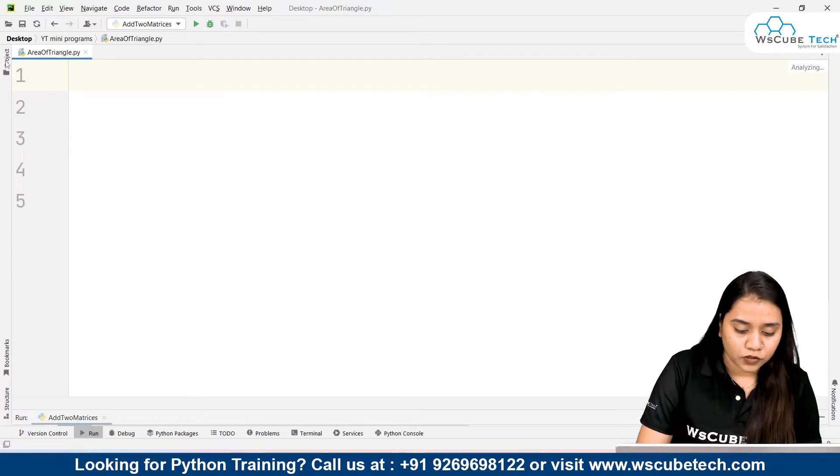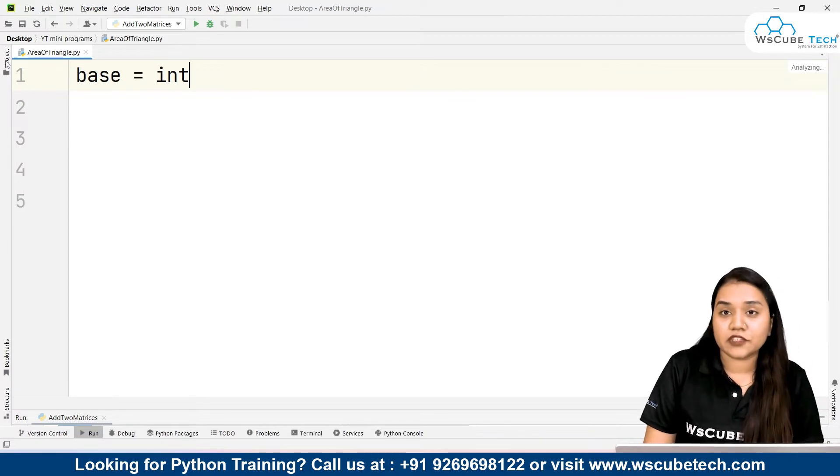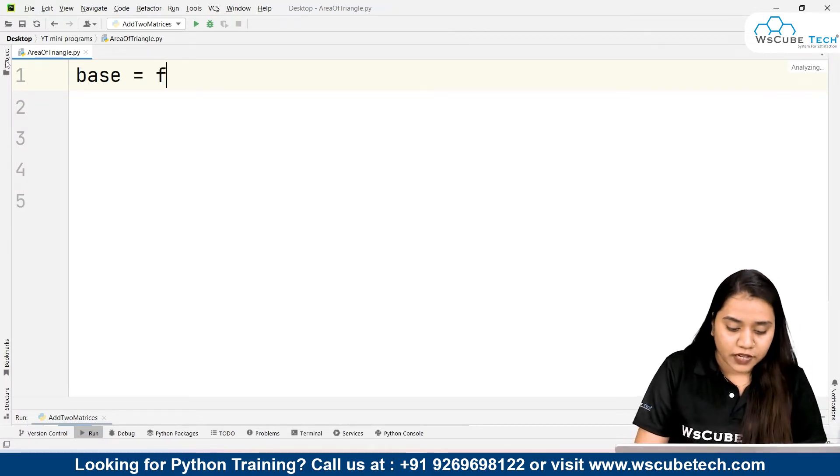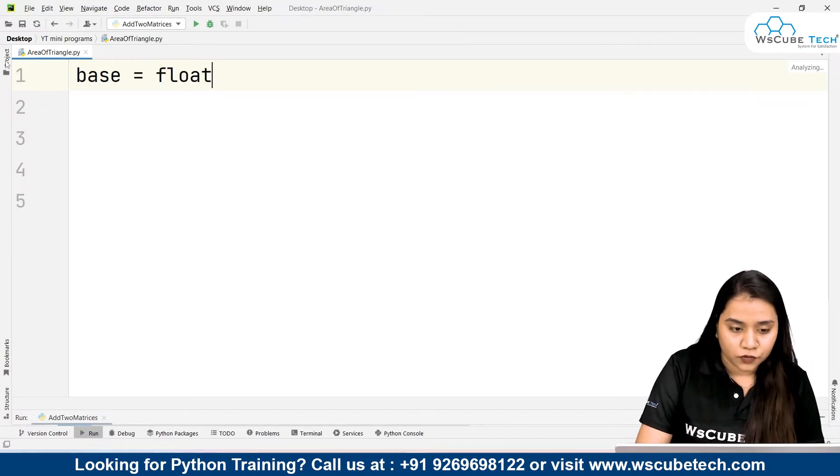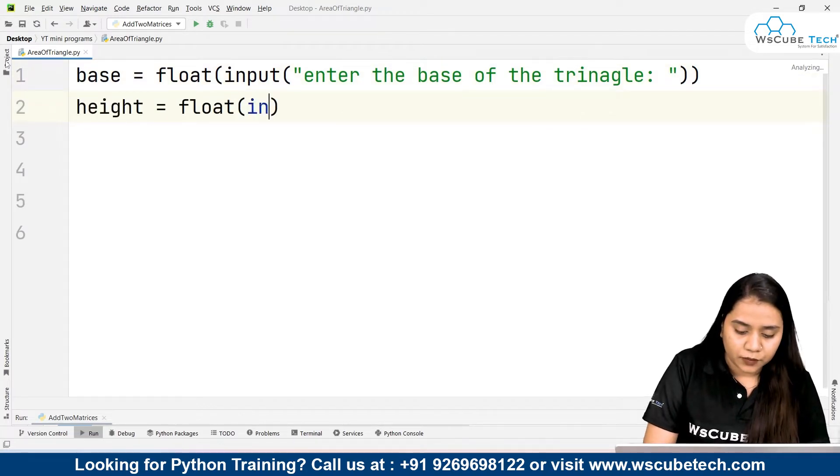For the base and height, we need to take the input from the user. I'll be taking two variables. Base equals input - you can take the input in integer or float, I'll prefer float over integer. So float input 'enter the base of the triangle:' and next we will be needing height equals float input 'enter the height of the triangle:'